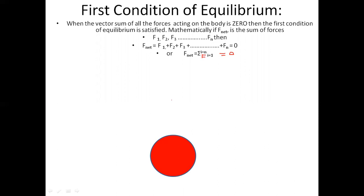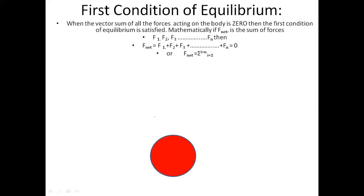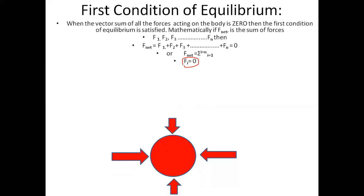Looking at the diagram, we have a circular shape and we apply force from all four sides. Because forces are applied from all sides, the body will not move, so it will be in equilibrium. This satisfies the first condition of equilibrium — the sum of all forces equals zero.